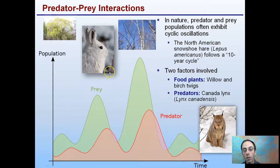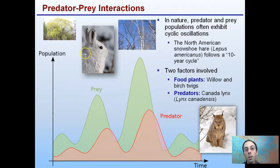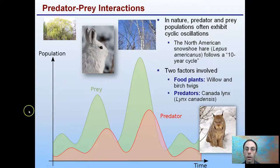What tends to happen in nature is shown by the example of the North American snowshoe hare and the lynx that feeds on it. As the rabbit population increases, there's a slight delay before the lynx population increases, then it drops as the rabbit population drops — it goes through this cycle. The rabbit's population depends on what it eats, in this case willow or birch branches. The lynx is dependent on the presence of the rabbit. Prey peaks, predator peaks with a delay, prey drops, predator drops — and so on.